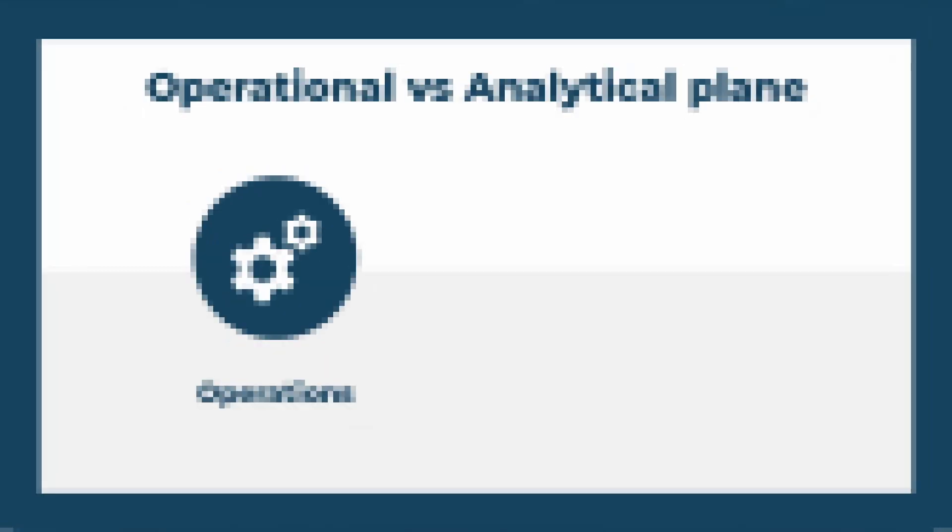The IT function of a large enterprise can be divided into two areas: operational and analytical planes. Analytics is usually downstream from operations, however there are exceptions to this rule. These two worlds are characterized by very different load profiles, and as a result the requirements for systems built in these realms are different.